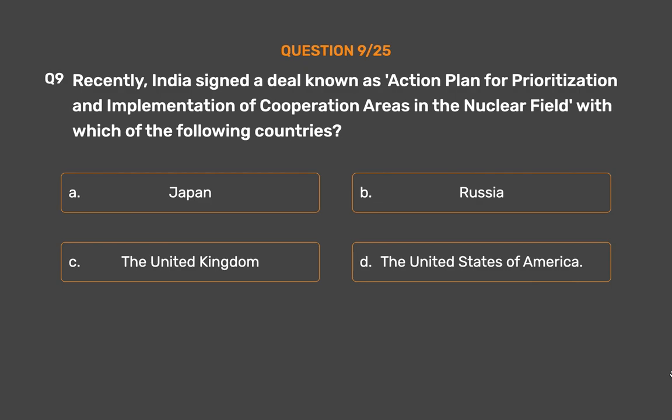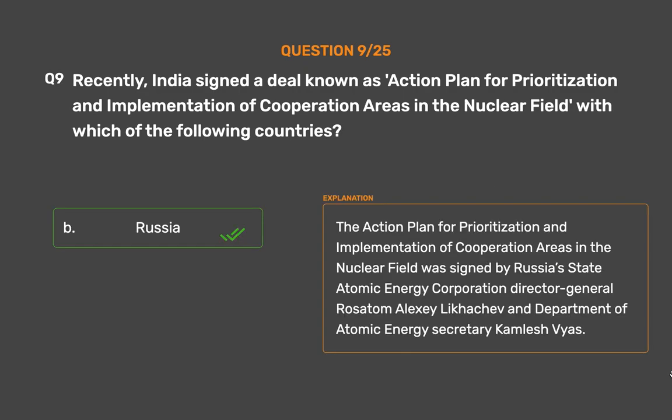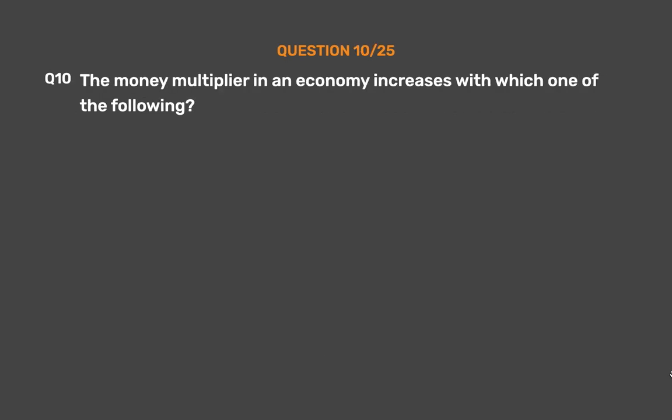The correct answer is Option B: Russia. The Action Plan for Prioritization and Implementation of Cooperation Areas in the Nuclear Field was signed by Russia's State Atomic Energy Corporation (Rosatom) Director General Alexei Likhachev and Department of Atomic Energy Secretary Kamlesh Vyas.